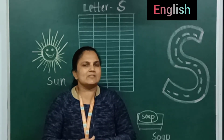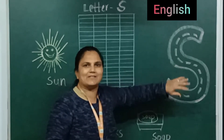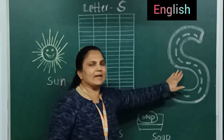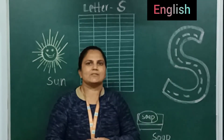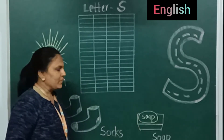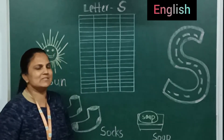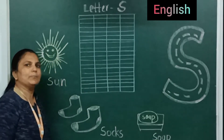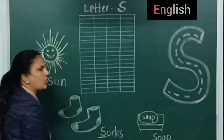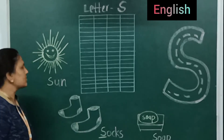In English subject today, I will explain how to write letter S. Which letter is this? This is letter S. S for soap — S, O, A, P, soap. S for socks — S, O, C, K, S, socks.